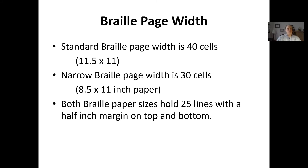When formatting your documents for your student, it's a good idea to look at the different types of formats. We have braille page width, which is a standard width of 40 cells — most textbooks will have 40 cells across the line, and the paper size here in the United States would be 11 by 11.5 inches. A narrow braille page is usually 30 cells, which is your standard 8.5 by 11 paper. On both sizes, you'll usually get 25 lines with a half-inch margin on the top and bottom.